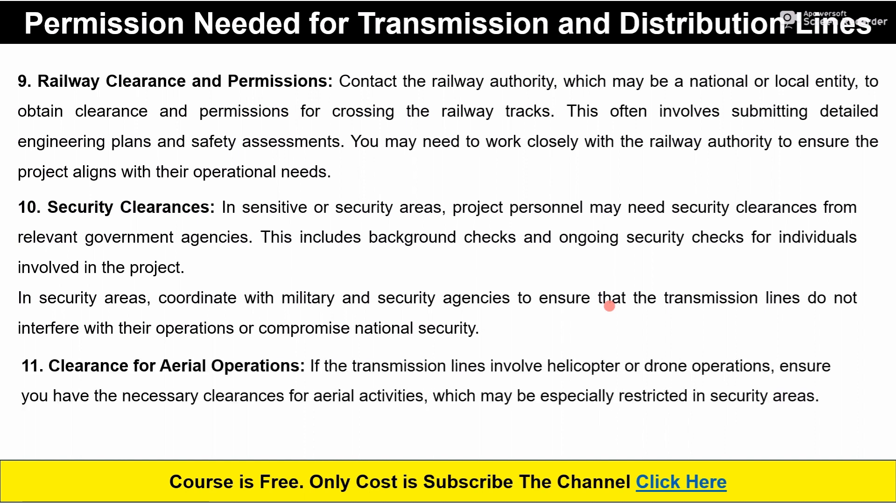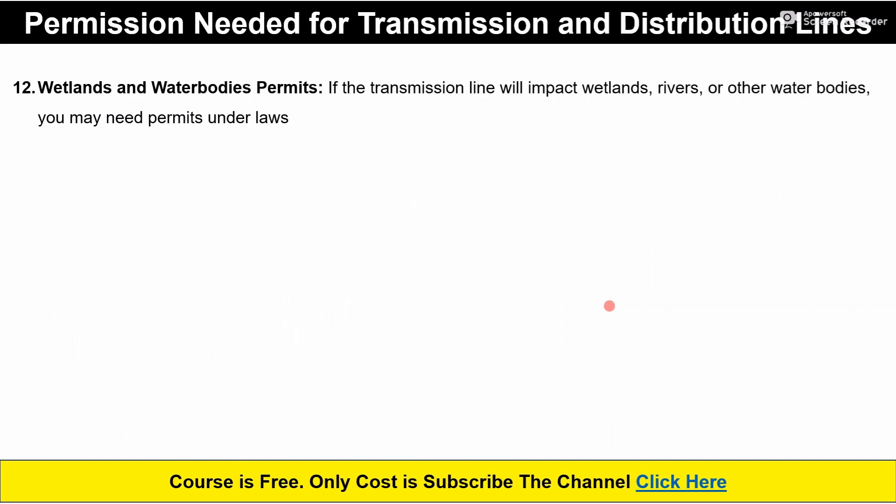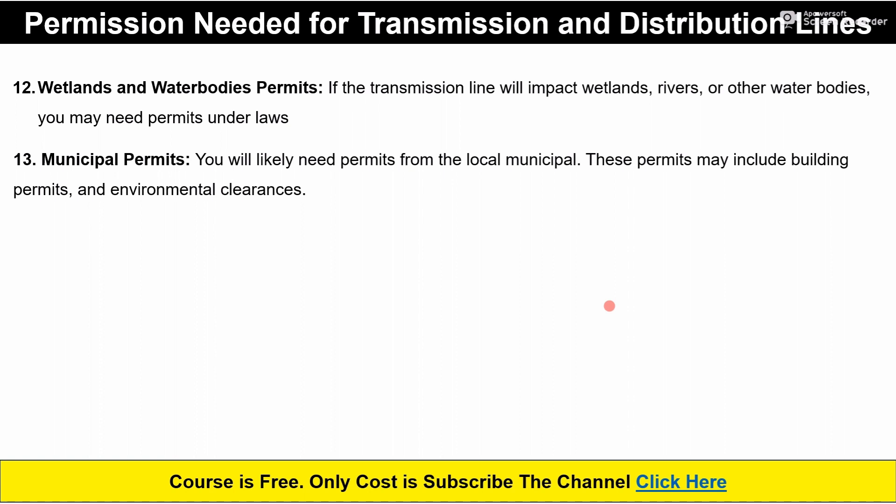Eleventh, Clearance for Aerial Operations — if the transmission project involves helicopter or drone operations, ensure you have the necessary clearance for aerial activities, which may be specially restricted in security areas. Twelfth, Wetlands and Water Bodies Permits — if the transmission line will impact wetlands, rivers and other water bodies, you may need permits under applicable laws. Thirteenth, Municipal Permits — you will likely need permits from the local municipality, which may include building permits and environmental clearance.